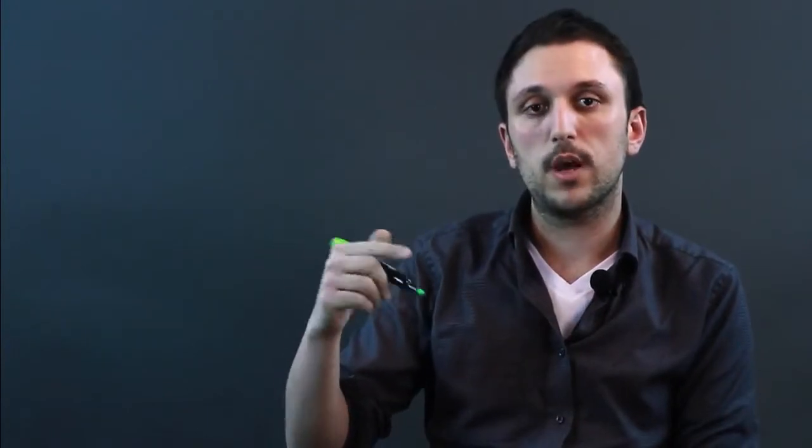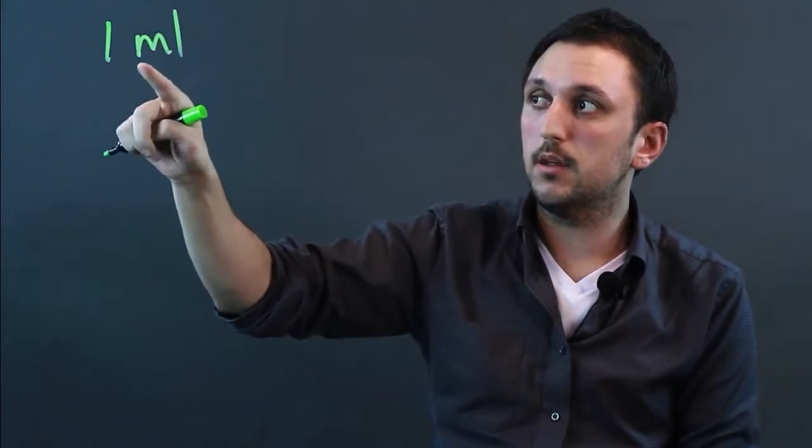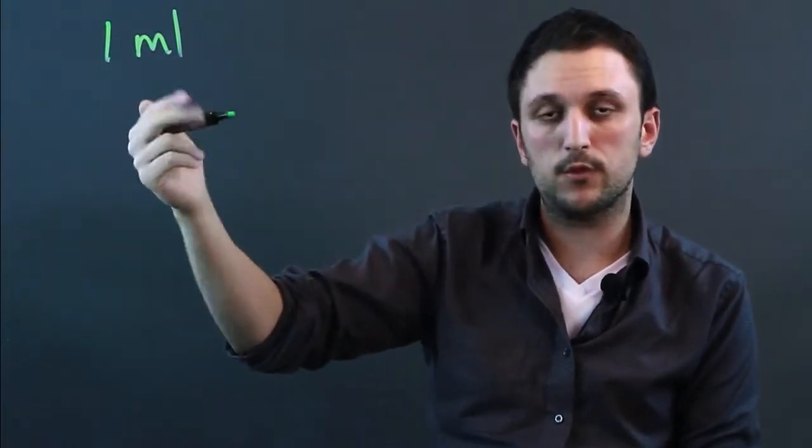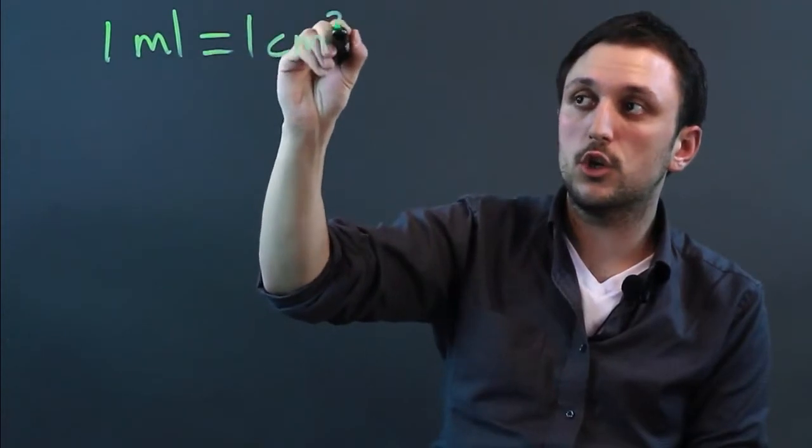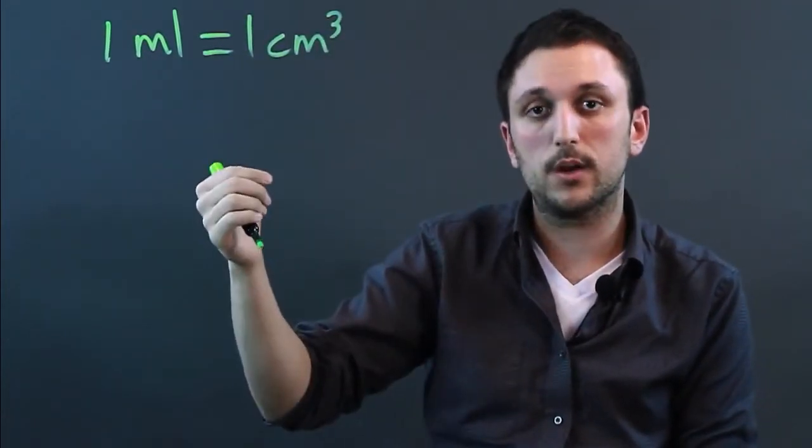Now the problem is, square centimeters are a measurement of distance, and square centimeters are not a measure of volume. So a milliliter is a measurement of volume, which is three-dimensional space. So one milliliter is equal to one centimeter cubed, but not one centimeter squared.